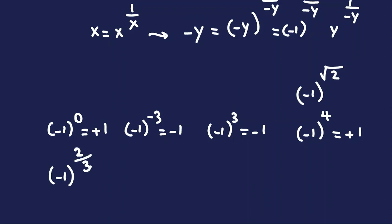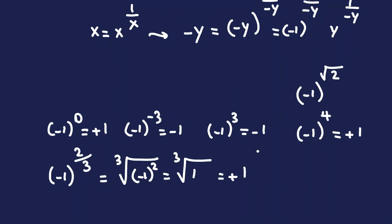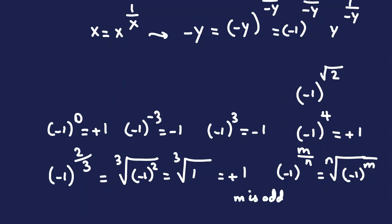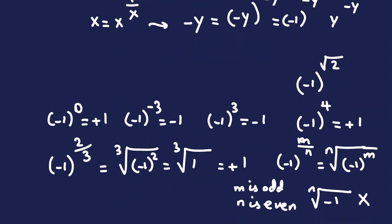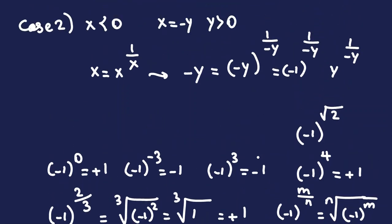For rational exponents m/n in lowest terms, (−1)^(m/n) means the n-th root of (−1)^m. This is problematic when m is odd and n is even — the result is undefined for real numbers. In other cases it is valid. Since x is real, the exponent 1/(−y) must be rational for (−1)^(1/(−y)) to be well-defined, so we require y to be rational.